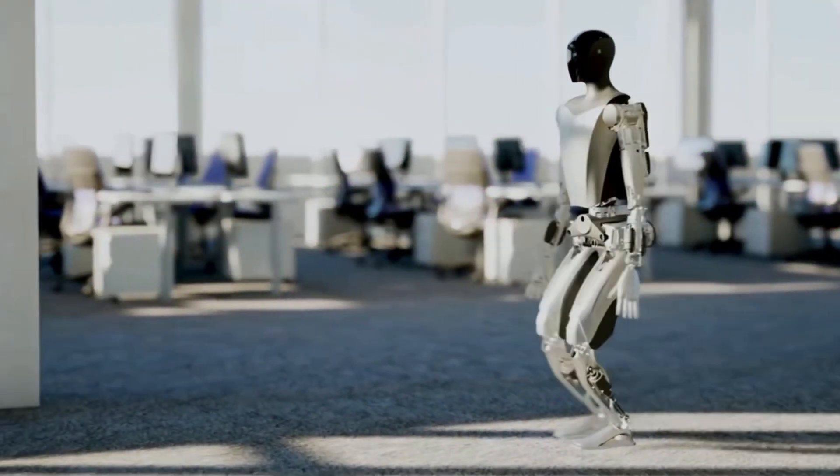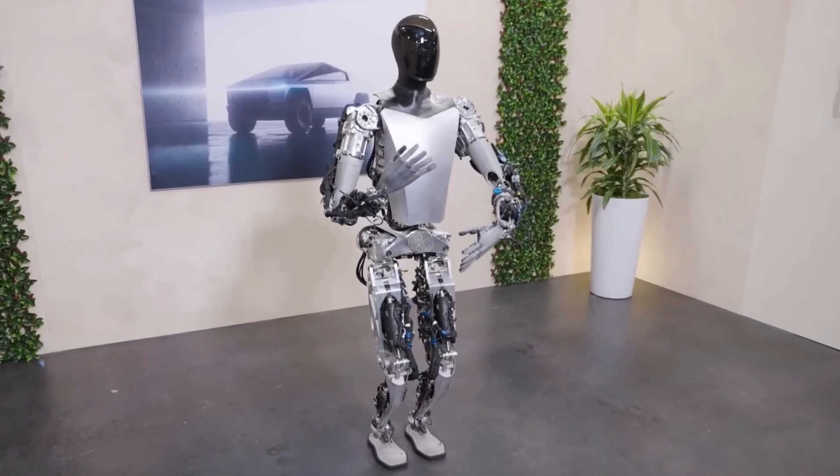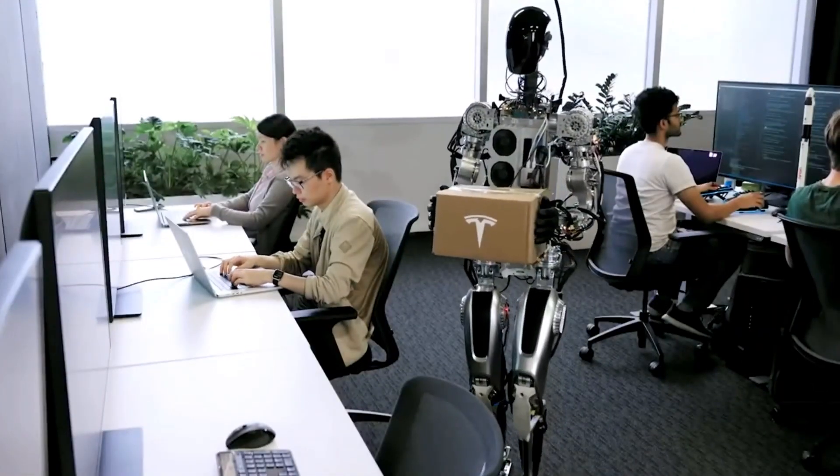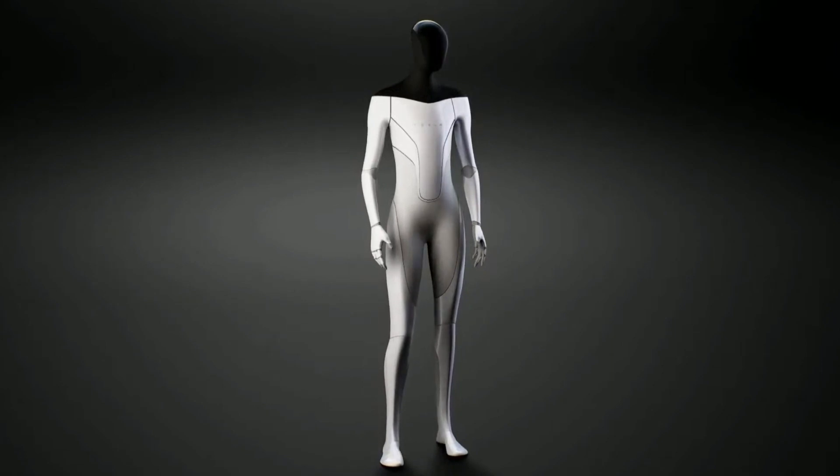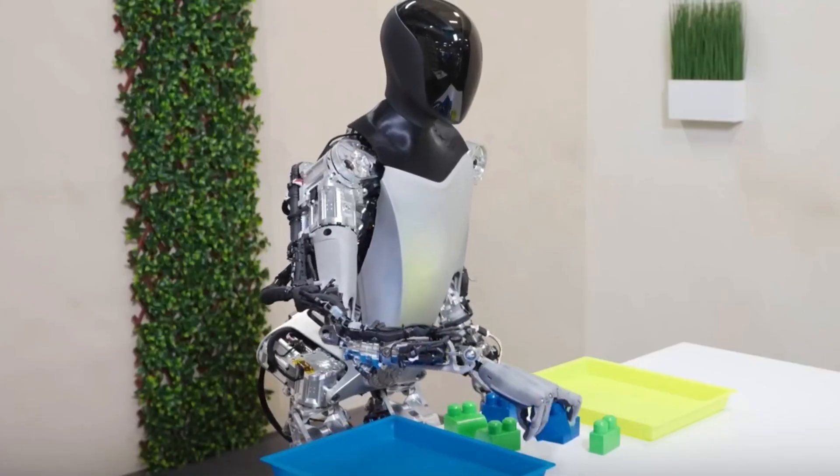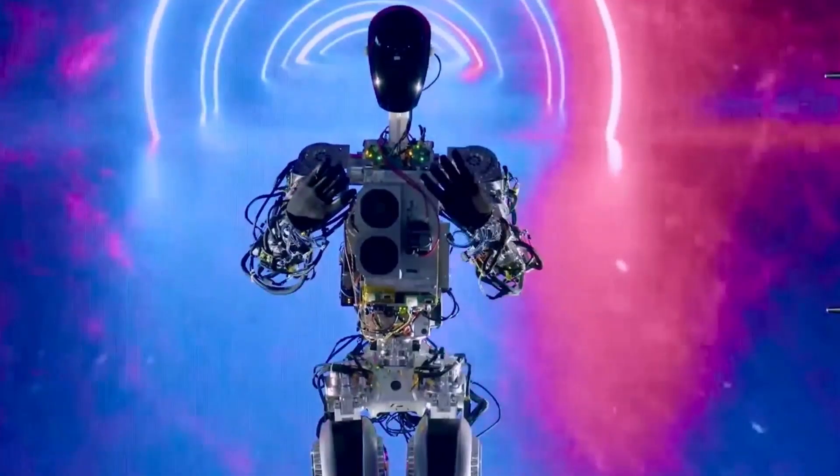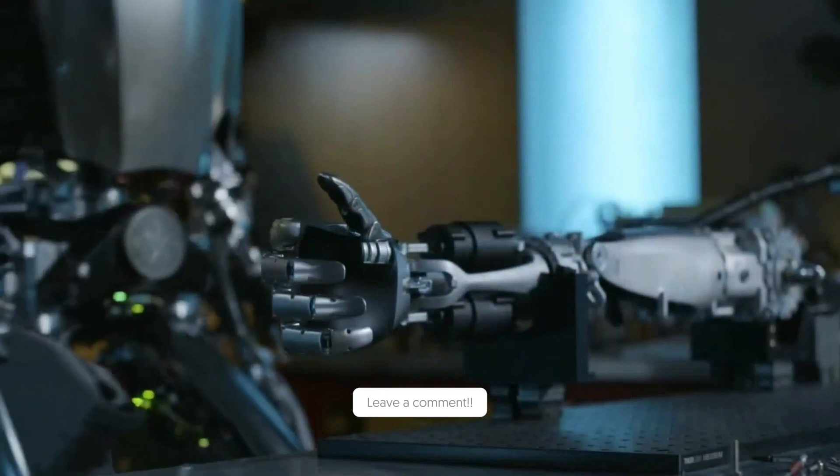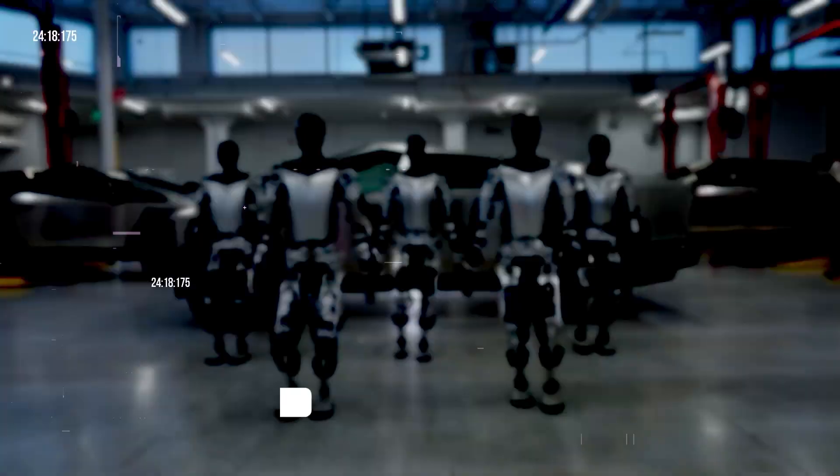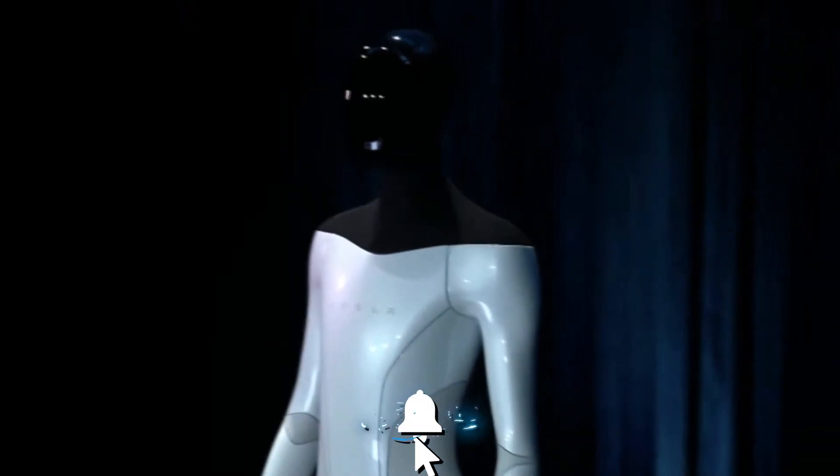Tesla Bot Optimus is a humanoid robot that Tesla is developing to assist humans in various tasks and scenarios. We have seen how Optimus has improved its skills and abilities using end-to-end neural nets, such as sorting objects by color, balancing on one foot, and maintaining a yoga pose. What do you think of Optimus and its potential impact on human life? Please share your thoughts and opinions in the comments below. And don't forget to like, share, and subscribe for more videos on Tesla and other topics.